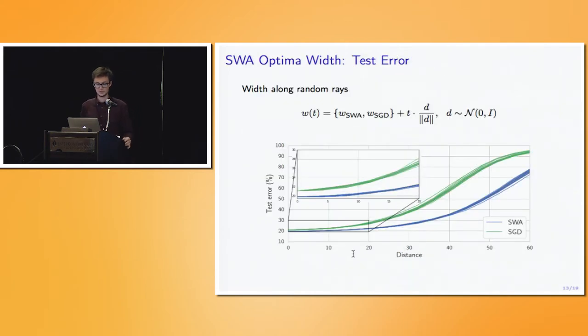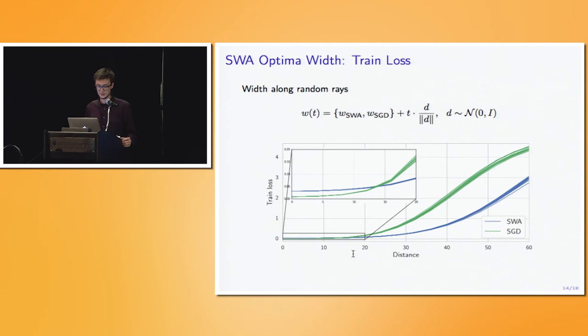Now in order to further understand the width of SWA and SGD solutions, we analyze the behavior of train loss and test error as we move away from these solutions in random directions in the weight space. For each blue line, we select a random ray starting from SWA solution, and we track how test error increases as we go away from SWA solution along this direction. What you can see here is that SWA not only performs better on test, but it's also substantially wider than the SGD solution in this particular sense. What's more interesting is that while SGD is actually better on train, SWA is still wider, which corresponds to our intuition about the correlation between width and generalization.